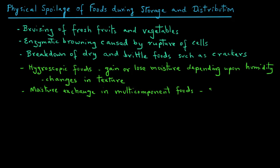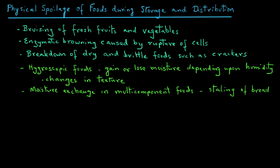For example, staling in bakery products is enhanced due to moisture transfer from the crumb, which has high water activity, to the crust, which has low water activity.